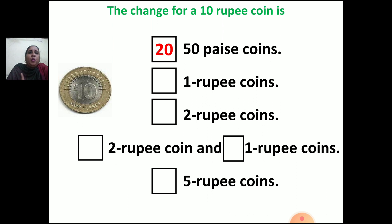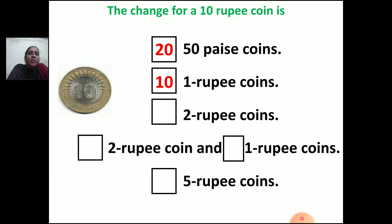For the 10 rupee change again: if you have 1 rupee coins, how many will you take to make 10 rupees? Very simple — 10 one-rupee coins will make 10 rupees. And if you have 2 rupee coins, how many do you need? Using the table of 2: 2 fives are 10, so you need 5 two-rupee coins to make 10 rupees.